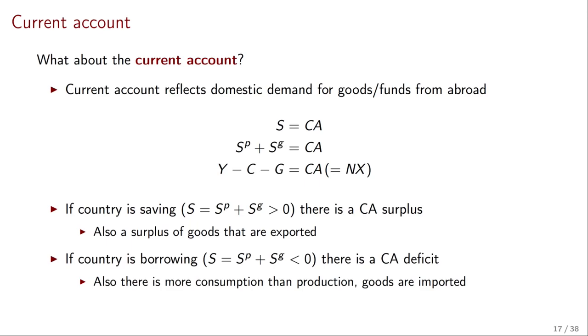If the country is borrowing, then there is going to be a deficit in the current account. But also, there is going to be more consumption than production. That's basically what it means that total savings are negative. This is going to be met by importing goods. So here we can see the important role of the current account in helping the economy accommodate its needs for saving or borrowing. If the economy wants to consume more than what it's producing, it can do so by importing and borrowing from abroad. Those two things go linked. If the economy wants to consume less than what it's producing, it can do so. But it's going to have an excess supply of savings that it can send abroad. And it's also going to have an excess supply of goods that it can also send abroad. So that's going to be the link between savings and the current account.